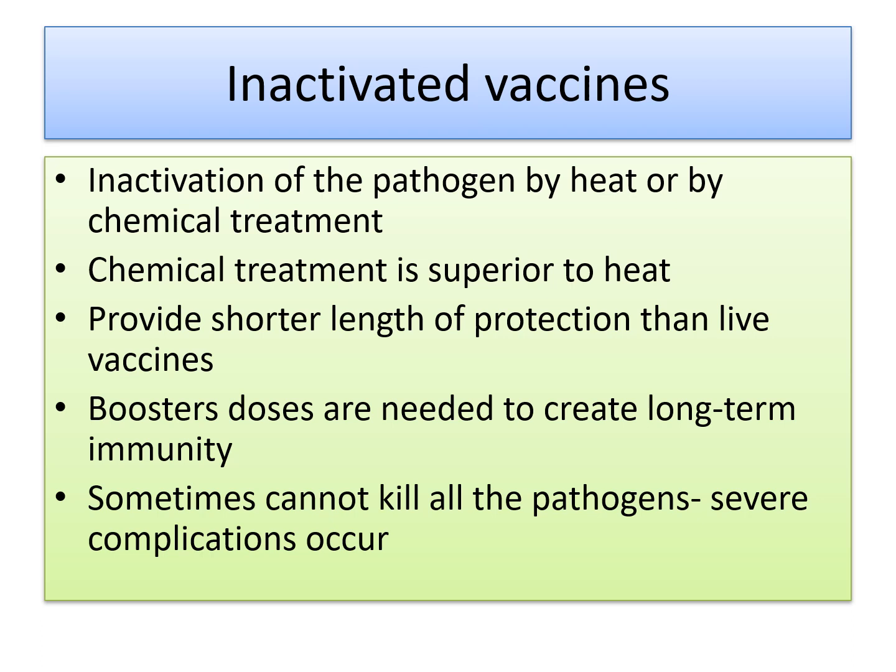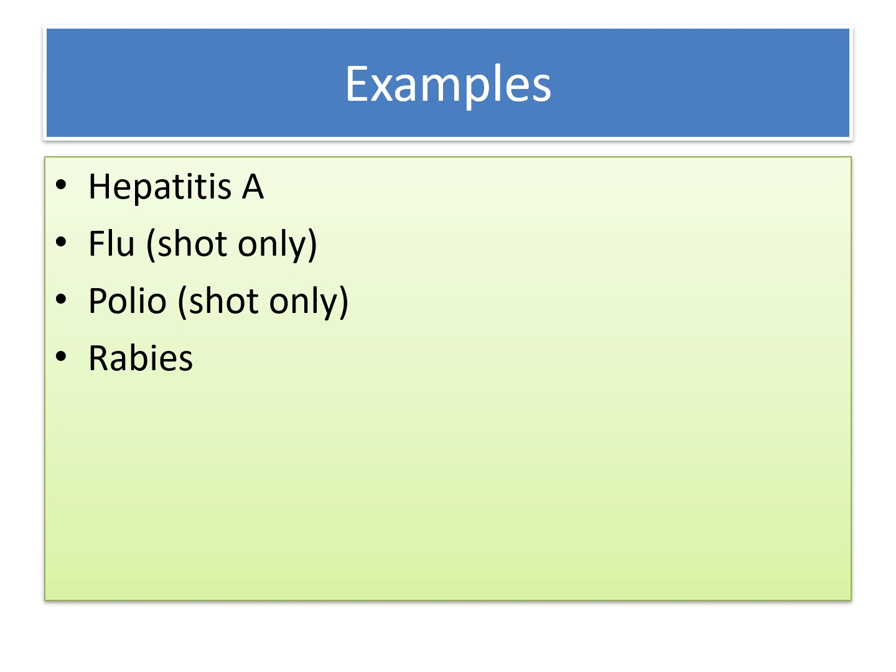Inactivated vaccines involve inactivation of the pathogen by heat or by chemical treatment. Chemical treatment is superior compared to heat treatment, so it is mostly preferred. These vaccines provide a shorter length of protection than live vaccines, so booster doses are needed to create long-term immunity. Sometimes these vaccines cannot kill all the pathogens, so severe complications can occur. Examples include Hepatitis A, flu, polio, and rabies.